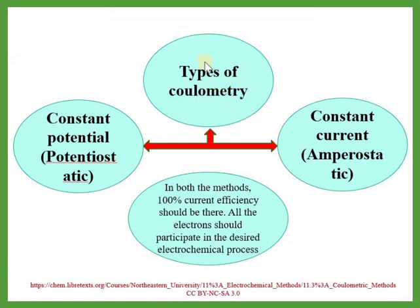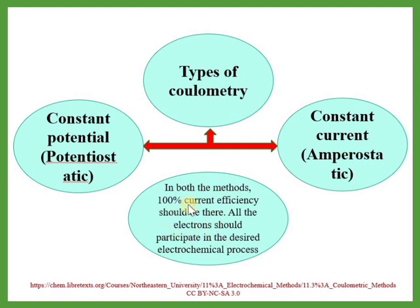There are two types of coulometry. One is controlled potential (or constant potential) coulometry, also called potentiostatic coulometry. The other is constant current (controlled current) coulometric analysis, called amperostatic coulometry. In both methods, current efficiency must be 100% — meaning all electrons must participate in the electrochemical process, so that current efficiency reaches 100%.